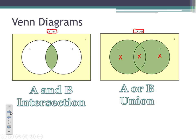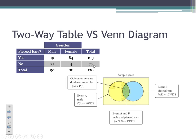Let's compare two-way tables and Venn diagrams, going back to our two-way table from the beginning of class. The Venn diagram representing this information shows the B circle with probability 103 out of 178, the yellow circle with probability 90 over 178, the intersection area in green at 19 out of 178, and then the other four students fall outside of these circles. That is our sample space of that two-way table.